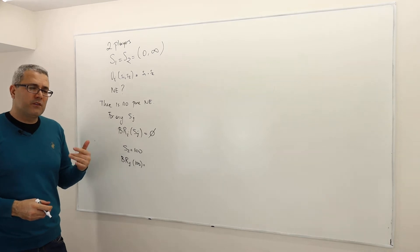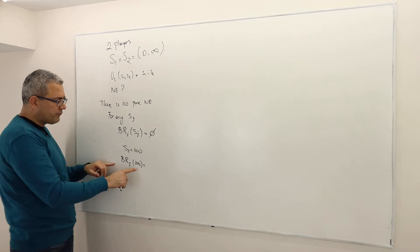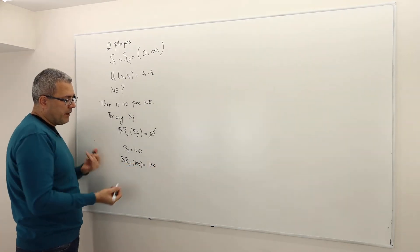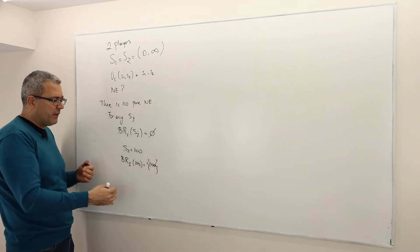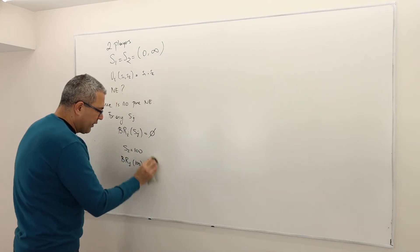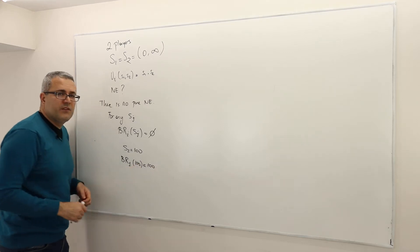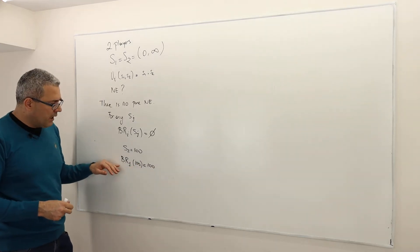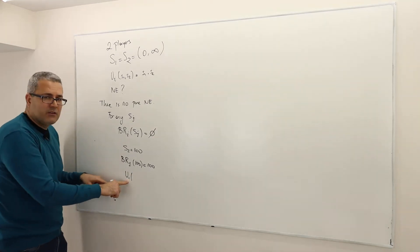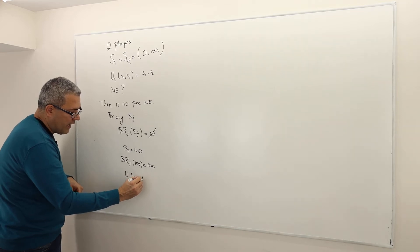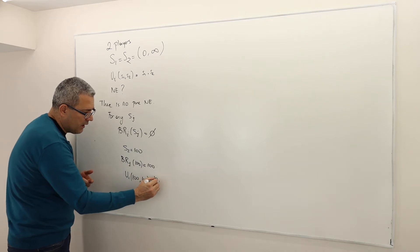The best response is basically the best strategy. Hundred is not a best response. Why not? Because if player one selects hundred and his opponent also selected hundred, let's calculate player one's payoff: it's going to be hundred times hundred, so it's 10,000.